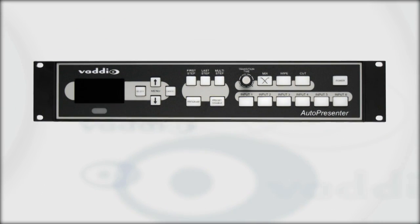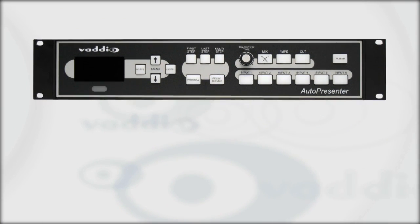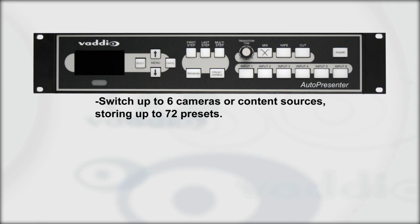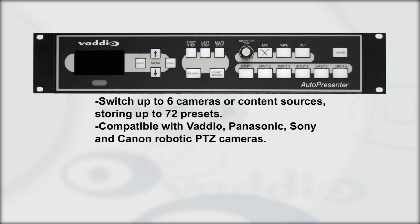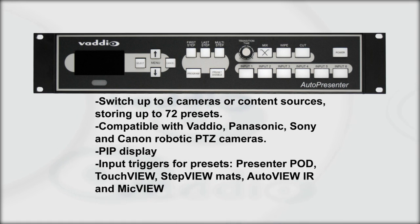The Auto Presenter features these key points: switch up to six cameras or content sources, storing up to 72 presets, compatible with Vaddio, Panasonic, Sony, and Canon robotic PTZ cameras. It also offers picture in picture display. Input triggers for presets include the presenter pod, Touch View, Step View mats, Auto View IR sensors, and Mic View.